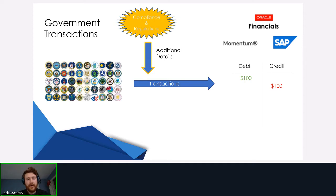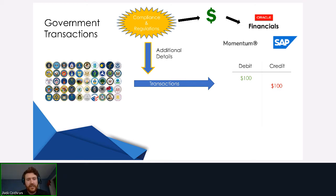For example, the government needs to know how many transactions or how many funds go to businesses or entities owned by females. This ends up costing a lot of money because the typical tactic for most agencies is to directly make changes to these big financial accounting systems, which are not really meant for that. They're optimized for maintaining monetary debits and credits, so even small changes can cost a significant amount of money.